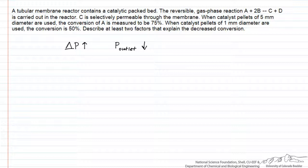This larger pressure drop can be seen through the Ergun equation and its dependence on the particle diameter, or you can reason that larger catalyst particles — say a tube filled with basketballs — it's easier to have flow going through that tube than a tube filled with sand. The diameter difference here isn't so large, just 5 mm to 1 mm, but that's the general trend.